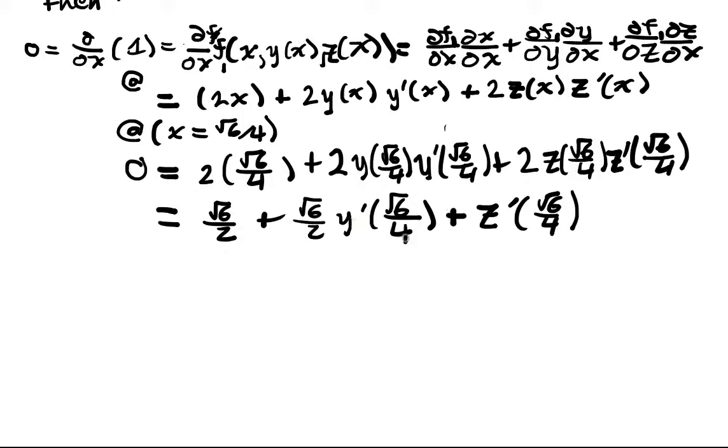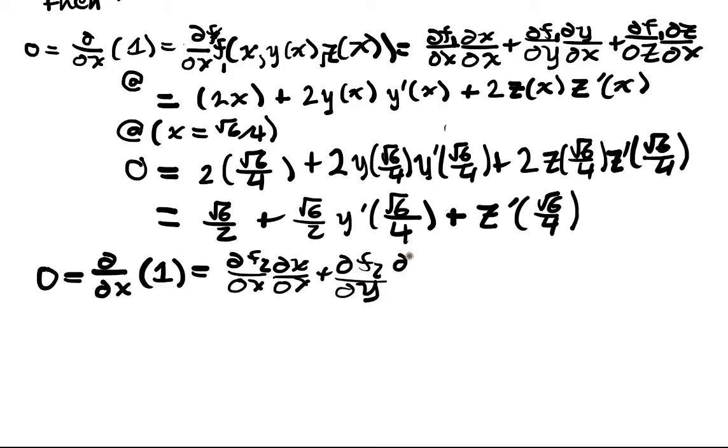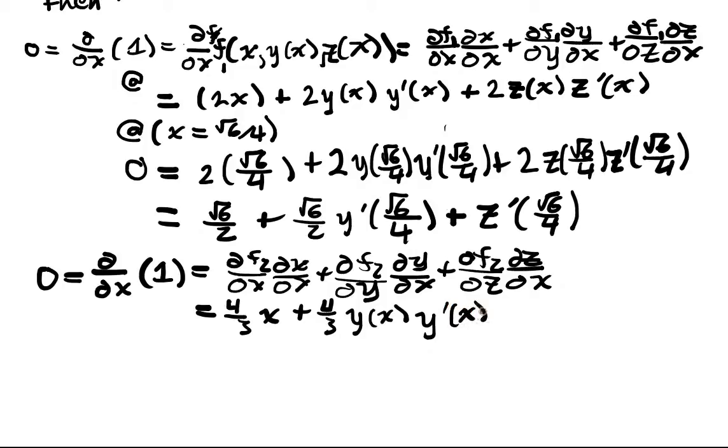I can get another linear equation by differentiating the other implicit constraint with respect to x. So again, that's equal to that, and then I have df₂/dx dx/dx + df₂/dy dy/dx + df₂/dz dz/dx. If I plug in things here, I'll get that this is 4/3 x + 4/3 y(x)y'(x) + z'(x).